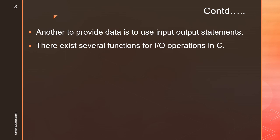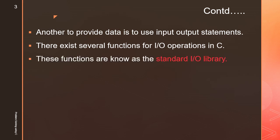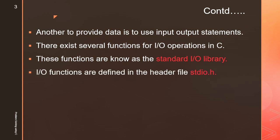There exist several functions for I/O operations in C. C language supports I/O operations through functions provided in the standard I/O library. These functions are known as the standard I/O library, and I/O functions are defined in the header file stdio.h.